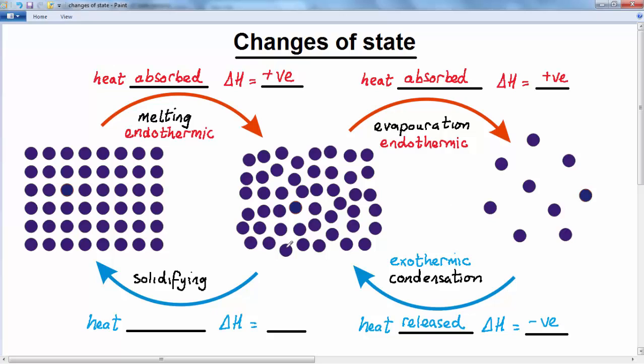Likewise, to solidify, the liquid needs to lose energy. It needs to give energy out. So energy is released, and delta H is negative. And again, we write exothermic for solidifying. Another example which demonstrates this exothermic nature, this need to release heat in order to change from the liquid to the solid state.